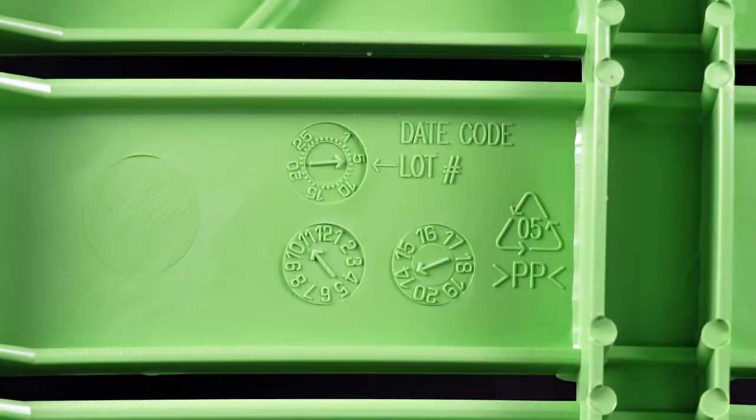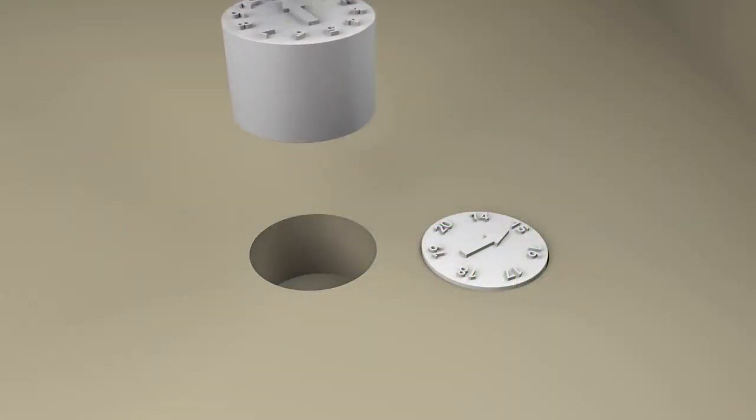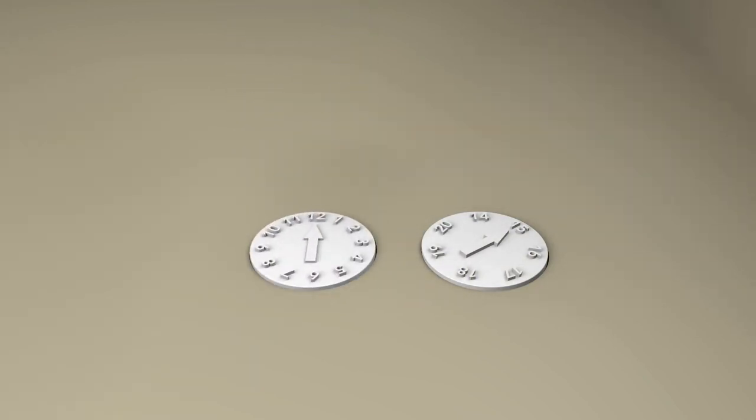Look around you and see how many injection molded objects you can find. Likely the device you're watching this on has injected molded parts. You should be able to find ejector pin witness marks and parting lines, but you may find something like this. It's a date wheel that shows the month and year the item was made. These are created by removable inserts and can be changed out for each run of the mold. They're very useful for tracking down defects.